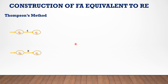In Thompson's method we use some basic rules. There are a few types of regular expressions. For a single input symbol — for example a, b, 0, or 1 — we draw a simple transition: Q0 on input symbol a goes to Q1.